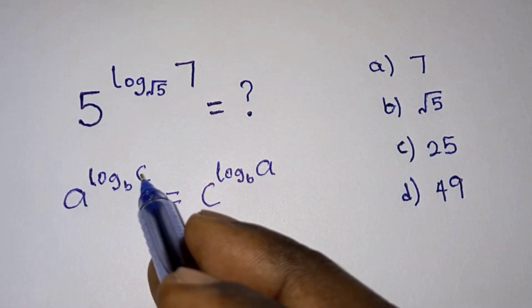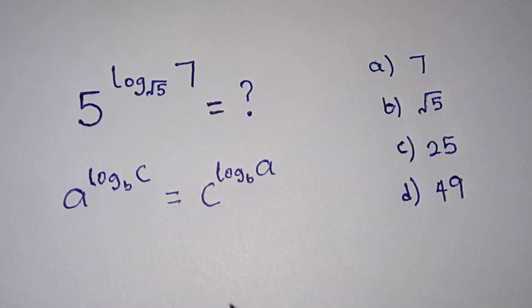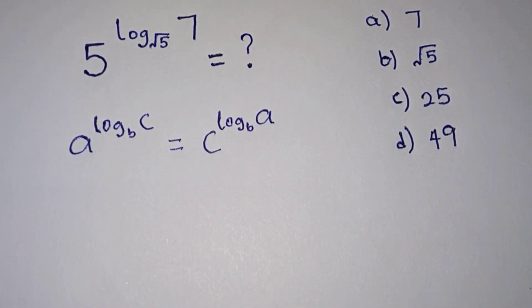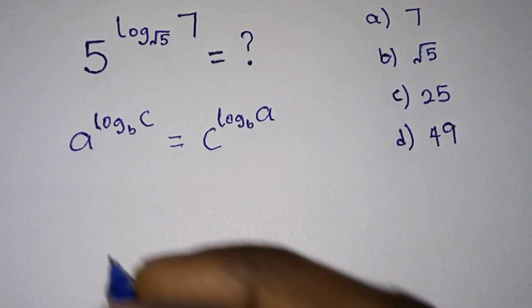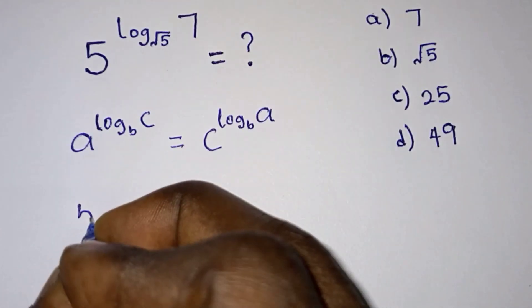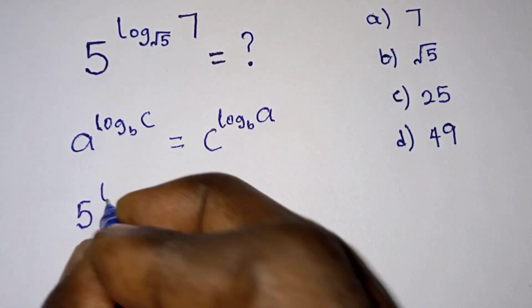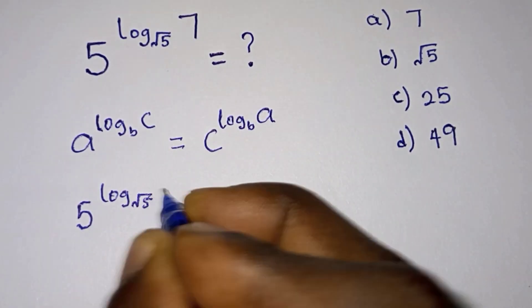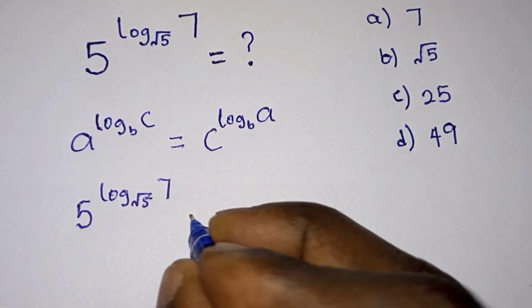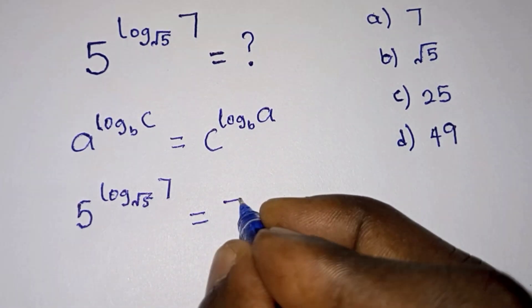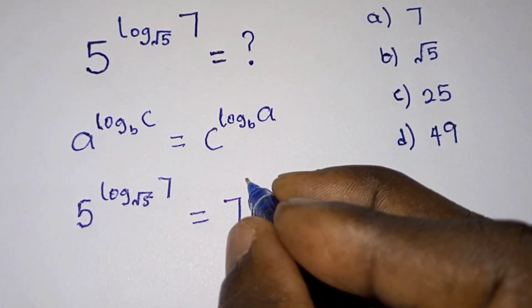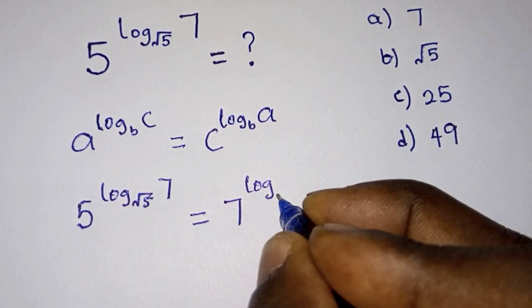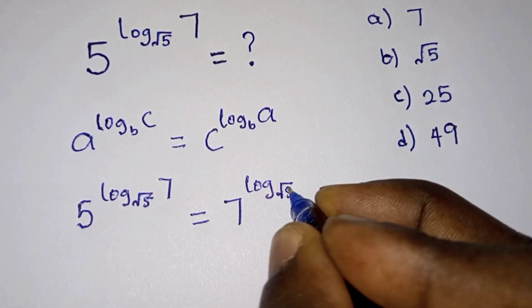So we have 5 to the power log base root 5 of 7 equals 7 to the power log base root 5 of 5.